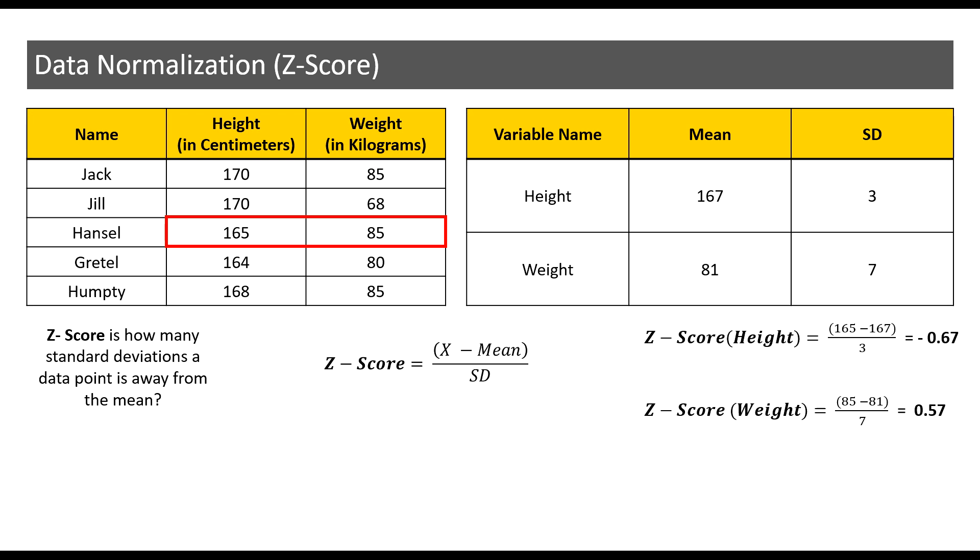Now let us calculate Hansel's Z-score for weight. Hansel's weight is 85 minus the mean weight, which is 81, divided by the standard deviation, which in this case is 7 kilograms. This in turn yields a Z-score of 0.57. Now this means that Hansel's weight is 0.57 standard deviations away from the mean.